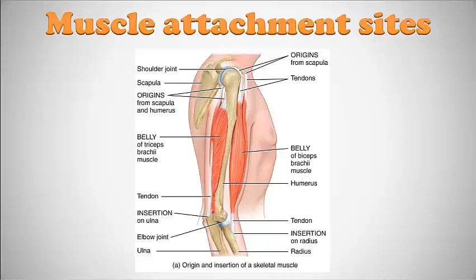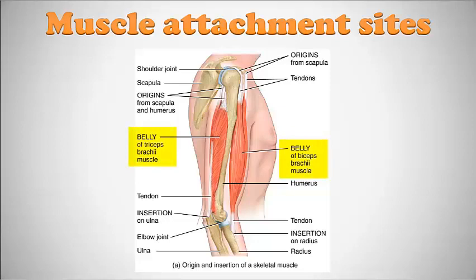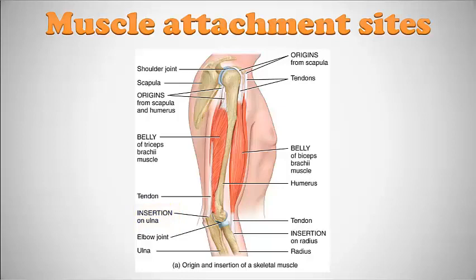The attachment to the stationary bone is referred to as the origin, and the attachment to the movable bone is called the insertion. For example, looking at the biceps brachii, it originates on the scapula and inserts on the radius. Similarly, the triceps brachii originates on the scapula and humerus and inserts on the ulna.